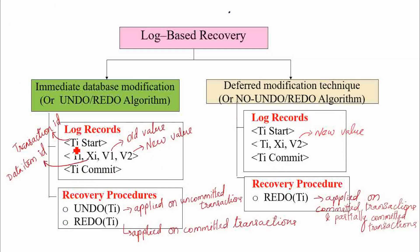In log records, TA denotes the transaction identifier, XI denotes the data item identifier, V1 indicates the old value of data item XI, and V2 denotes the new value of data item XI. In deferred modification technique, there is no change in the start and commit record; only there is an important change in the update record — no old value of the data item is maintained. Only the new value is recorded in the update record of the deferred database modification technique.